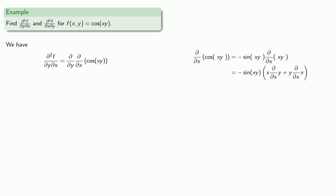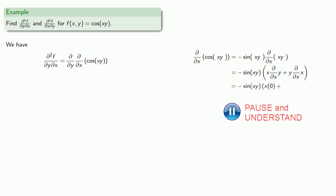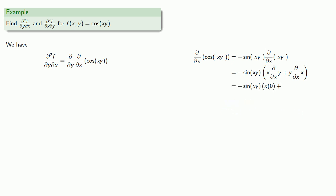Since this is the partial derivative with respect to x, we're treating y as a constant. The derivative of y with respect to x — well, y is a constant, so that gives us 0. And the derivative of x with respect to x is just 1. And we can do a little clean up.